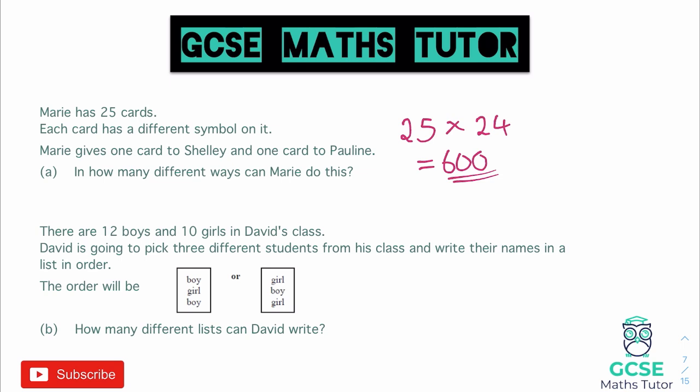This is meant to be a quick video, so I won't go fully into depth as to why we multiply here. Essentially, for every one of those first 25 cards, Pauline could have had 24 different cards — so for all 25 there are 24 different possibilities, giving us 25 multiplied by 24. That's our final answer, and particularly if you have a calculator, this is a really nice question.